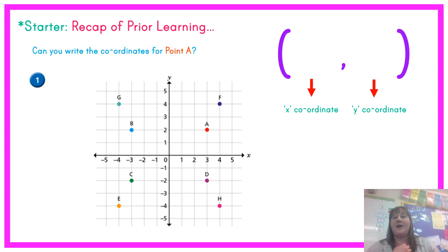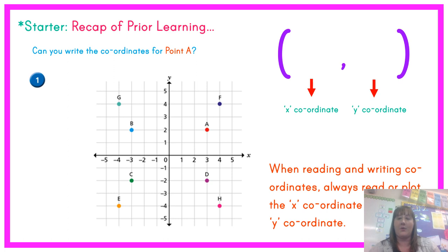So our first slide is recapping reading and plotting coordinates. On the screen you should see a four quadrant grid. It's asking you to write the coordinates for point A. You can see from the grid that point A is in our first quadrant. When we read and write coordinates we always read or plot the x coordinate before the y. If we're looking at point A we can see that we go across to 3 on our x axis before going up to 2 on our y axis. So the coordinates for point A are 3, 2.